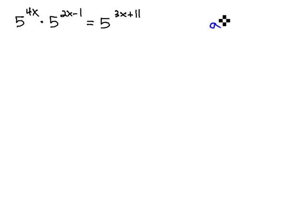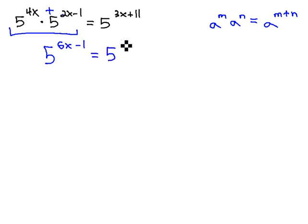Recall, we have an exponent property that says a to the m times a to the n. If the same base is multiplied, we can add the exponents together. So, that's what we can do on the left side is we combine those under a single 5. We're going to add the exponents together. 4x plus 2x is 6x, and we have a minus 1, equals 5 to the 3x plus 11. Keeping that single base, we're allowed to add the exponents.